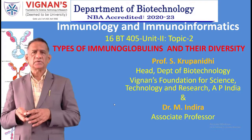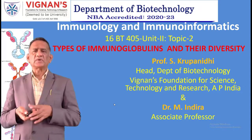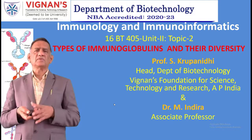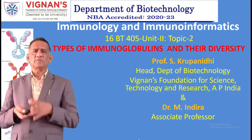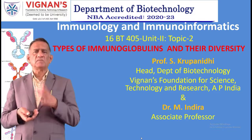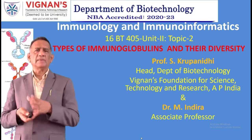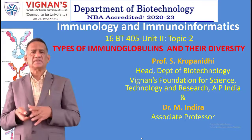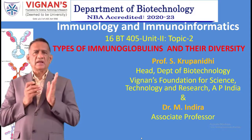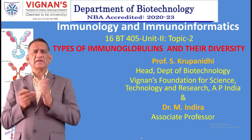Topic 2 is types of immunoglobulins and their diversity. In Topic 1 we have seen the structure and function of immunoglobulin. That is the key topic - Porter and Edelman proposed the Y-shaped structure. In detail we have seen the light chain, heavy chain, and their molecular weights.